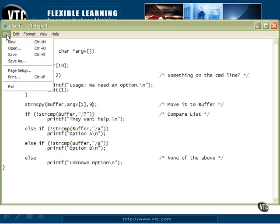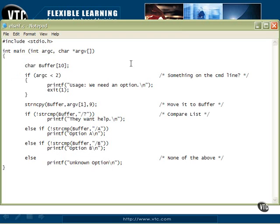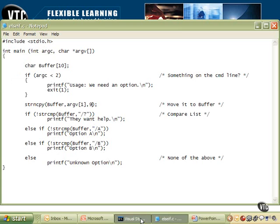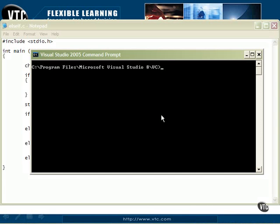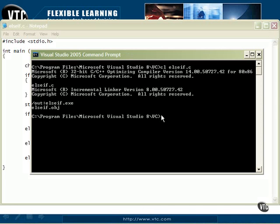What we'll do is save this so we know we're working with the right code. And we will come back here to our command line. And we will do our CL, else if.c. And there we compile it. And we get our program, else if.exe.